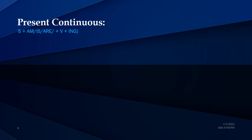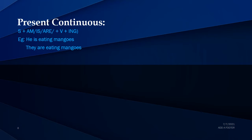The next tense is present continuous tense. The format is: subject plus am/is/are plus verb plus -ing. If the subject is 'I', we use 'am + verb + ing'. If it is he, she, or it, we use 'is + verb + ing'. If it is you, we, or they, we use 'are + verb + ing'. For example: 'He is eating mangoes' — 'he' is singular so we use 'is'. 'They are eating mangoes' — 'they' is plural so we use 'are'.